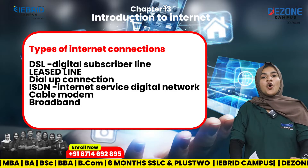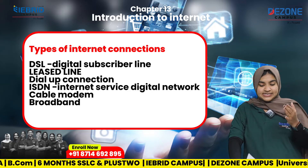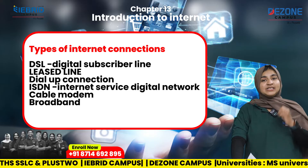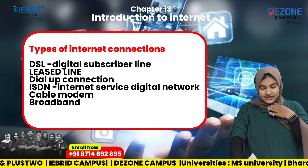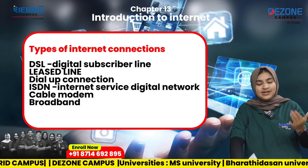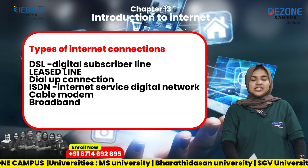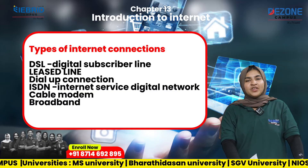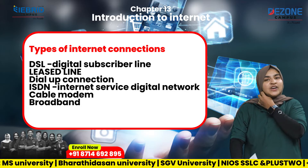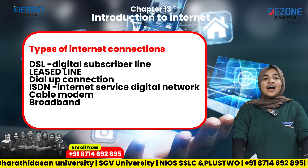Next is broadband. What do you call broadband? We use ISDN, leased line, and DSL line. Broadband offers a great download speed and a good internet connection. The types of internet connection are: DSL, Leased Line, ISDN, Cable Modem, Broadband, and others.